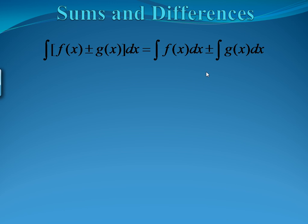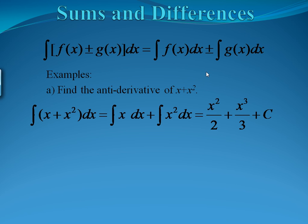Sums and differences: if you integrate two functions that are either added or subtracted, you can integrate them each individually and add or subtract what you get. For example, find the antiderivative of x plus x squared. Since they're separated by addition, we take the antiderivative of x plus the antiderivative of x squared. For x, there's an invisible power of 1, so adding 1 gives x squared over 2. For x squared, adding 1 gives x cubed over 3. So our answer is x squared over 2 plus x cubed over 3 plus c.